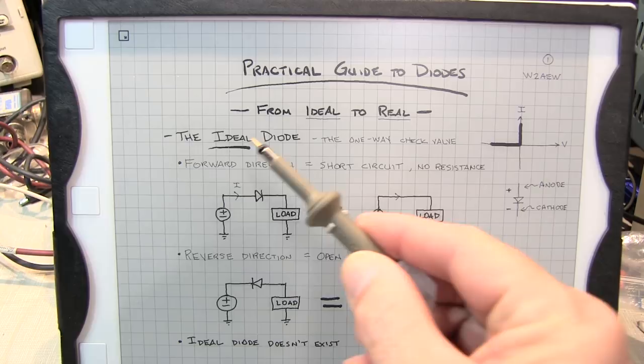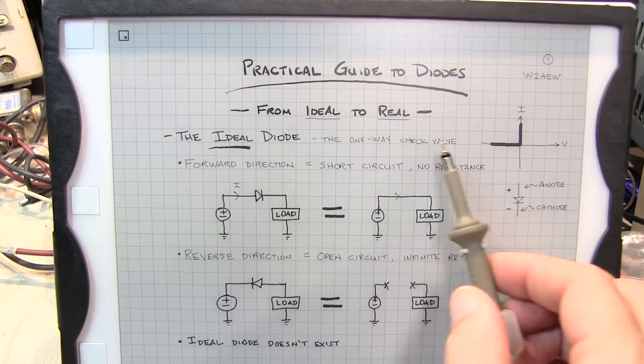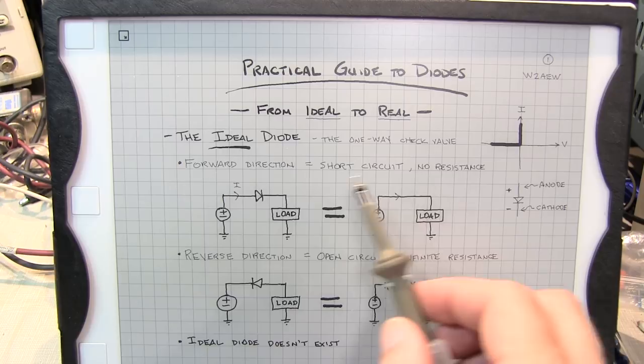First let's consider an ideal diode which of course doesn't exist but it's helpful to just understand the overall behavior of most diodes as an ideal diode. You can think of that as a one-way check valve. In the forward direction the diode looks essentially like a short circuit. No resistance, it allows current to flow freely from one end to the other.